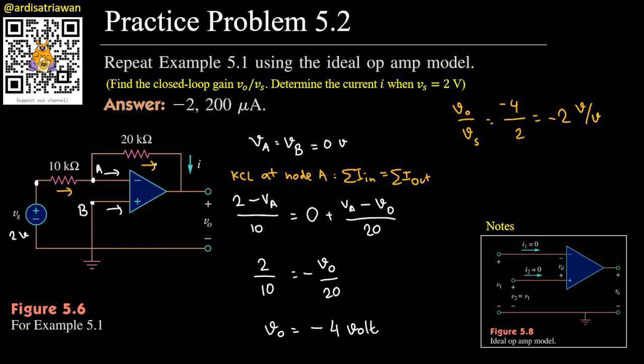Then we are asked about the current i here. The current i can be calculated by using va minus v0 divided by 20. We know all of them: va is zero and v0 is minus 4, so minus minus 4 that will be plus 4, and then divided by 20. 4 divided by 20 that will be 0.2.